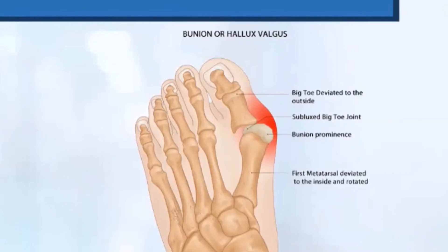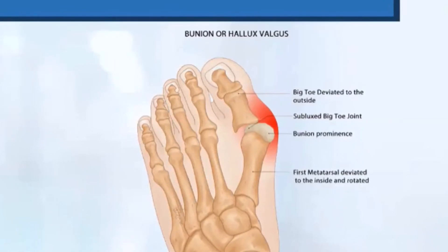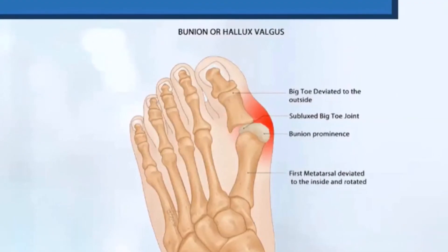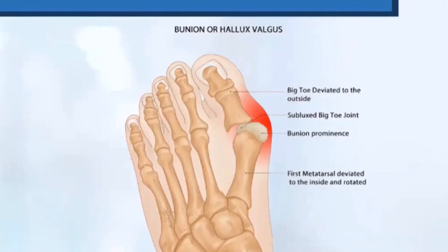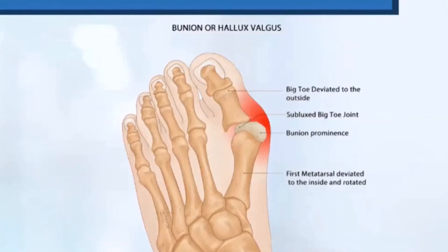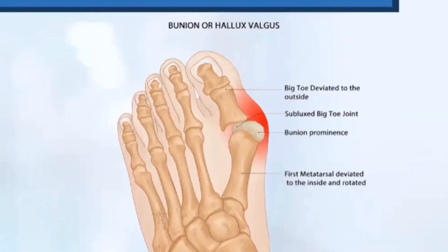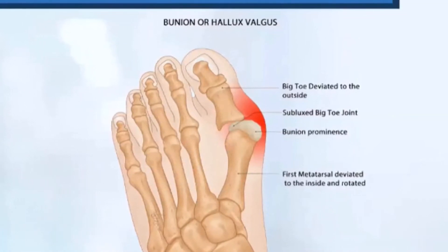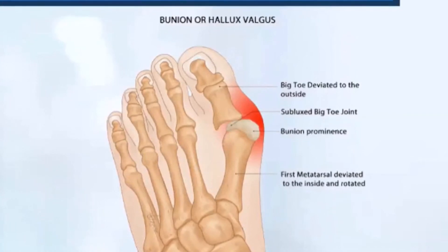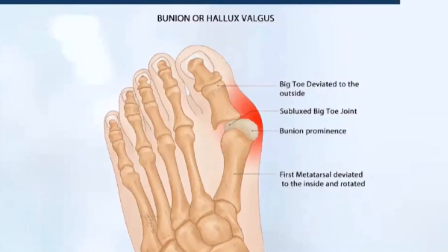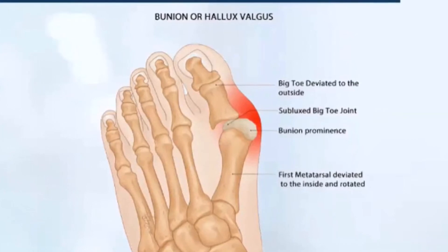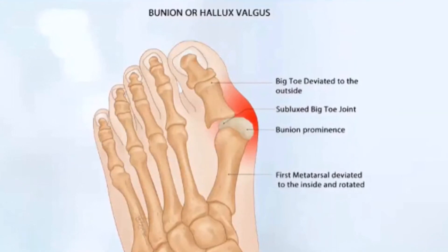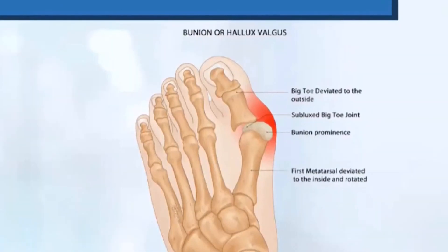We look at whether the patient has a flat foot deformity or a flexible arch. The flexible arch can cause the bunion to worsen — the more pressure on the inside of the foot as it flattens, the more pressure on the first metatarsal, causing it to further deviate. If a flat foot deformity is identified, an orthotic, which is an insert in the shoe, can be used to stabilize the foot and hopefully prevent the bunion from worsening.